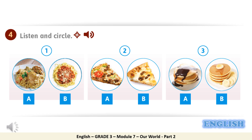It's now time to answer the questions. Number 1: the correct answer is A, chicken majboos. Number 2: the correct answer is A, pizza with cheese, meat and vegetables. Number 3: the correct answer is B, banana pancakes.